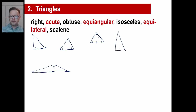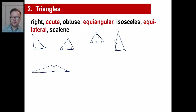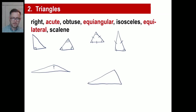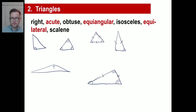A regular triangle has all sides equal. An isosceles triangle has at least two sides the same length, which means the angles across from those sides are also the same. An equilateral triangle has all sides the same length. A scalene triangle has none of the sides or angles the same as another — tick marks of one, two, and three show they're all different.